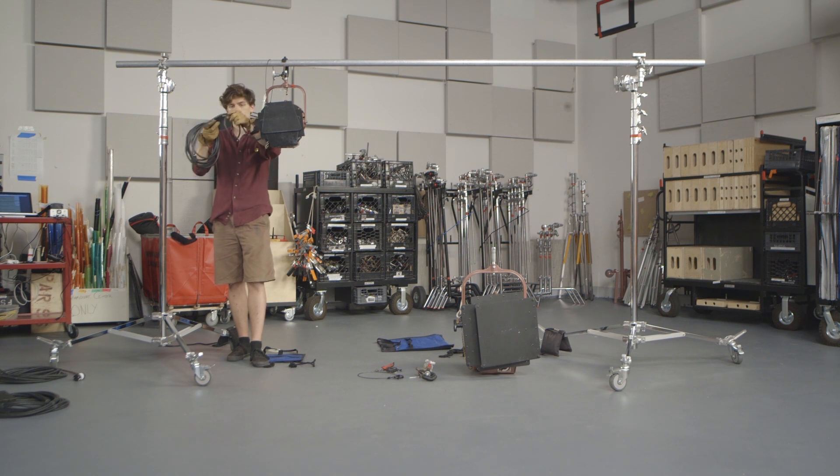Once the clamp is secure, tie up the excess cable to the pipe. Be sure nothing is hanging below the light.